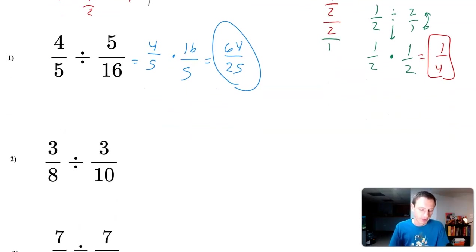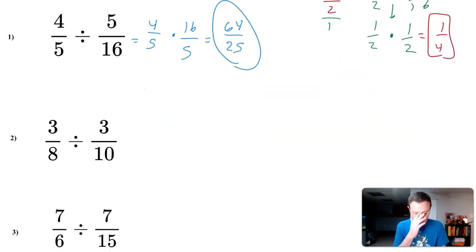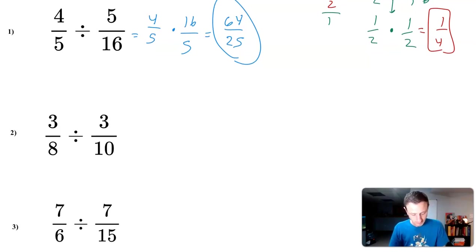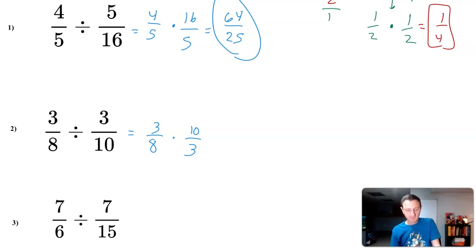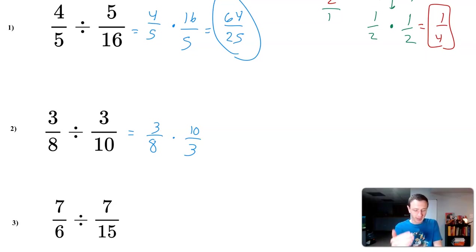Multiplying across: four times sixteen is 64, and five times five is 25, so we get 64 over 25. That doesn't simplify, and you could write it as a mixed number, but I'll keep it as is. Next problem: three eighths divided by three tenths. We rewrite as three eighths, change division to multiplication, and take the reciprocal of three tenths — which is ten over three.